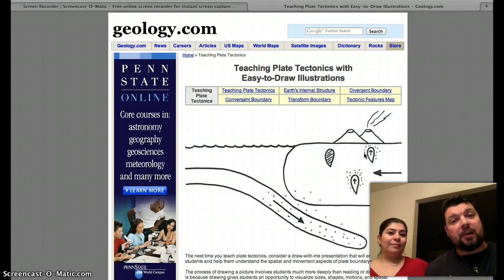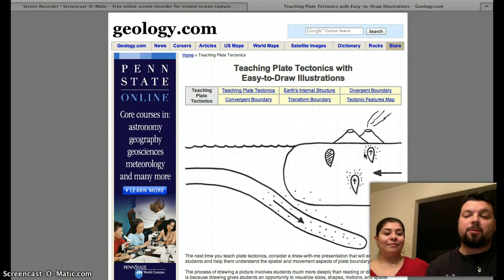Video one, we saw Pangea broke apart, right? Video two, convection currents in the mantle, which caused Pangea to break apart. Do you remember that? Yes. Of course you do. So now in this third video, I'm going to show you the boundaries that occur on the crust. And these are going to be the ones that we do in the lab.